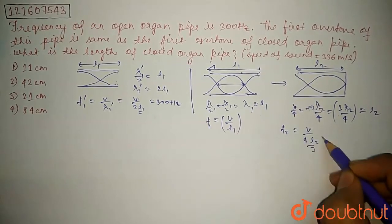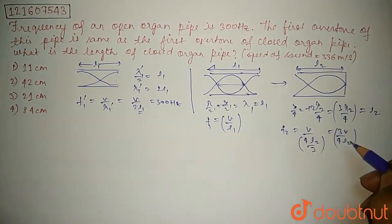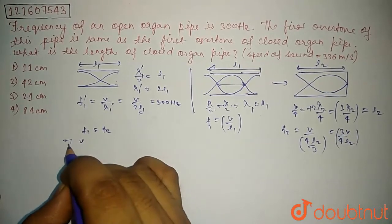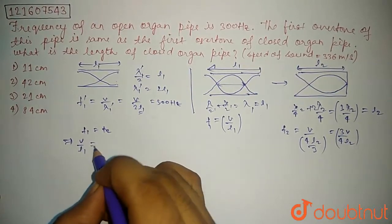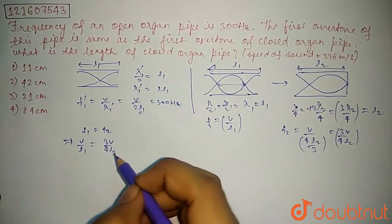And this is equal to f1 is equal to f2. That implies V by L1 is equal to 3V by 4L2.